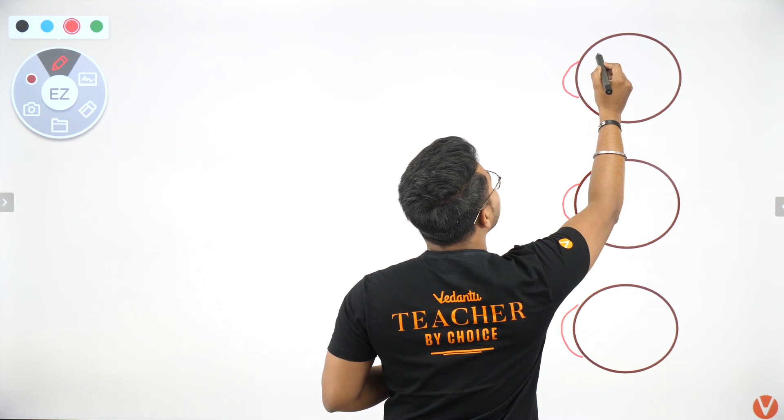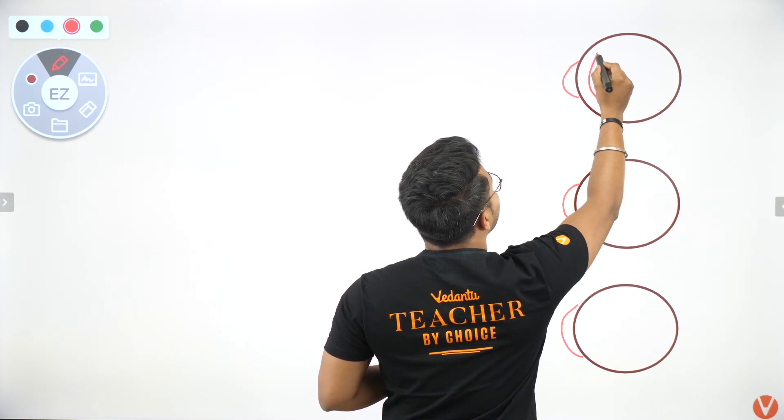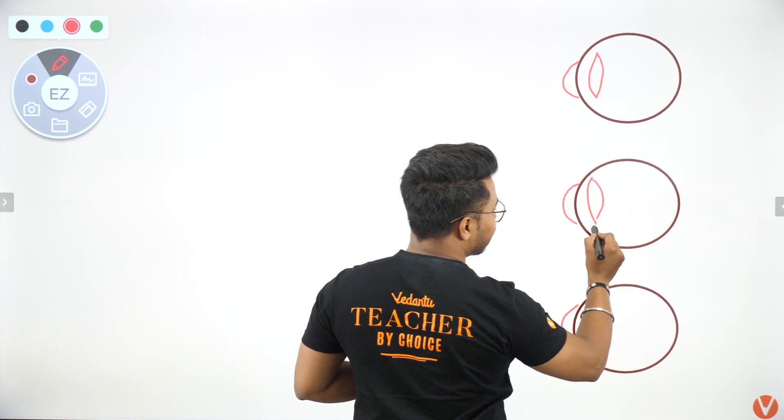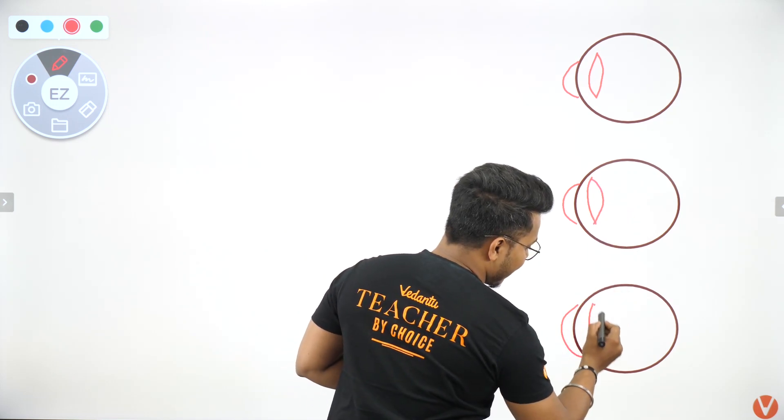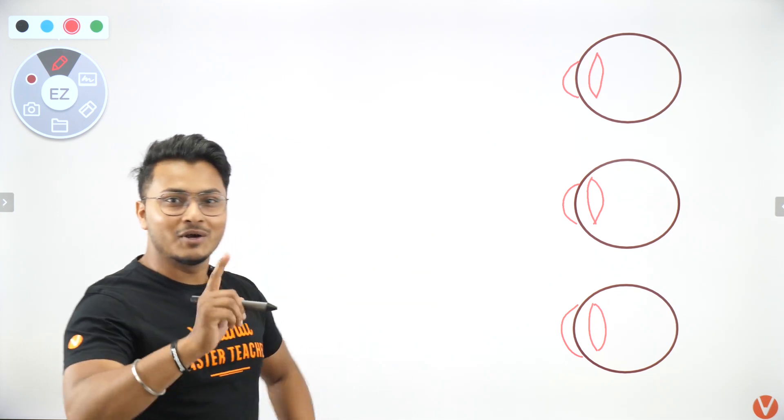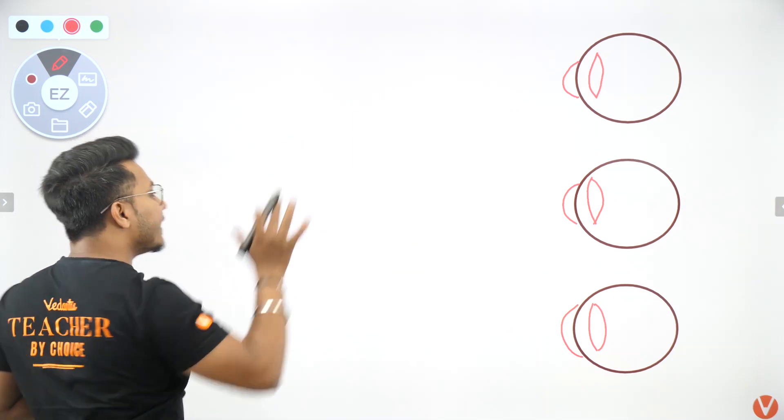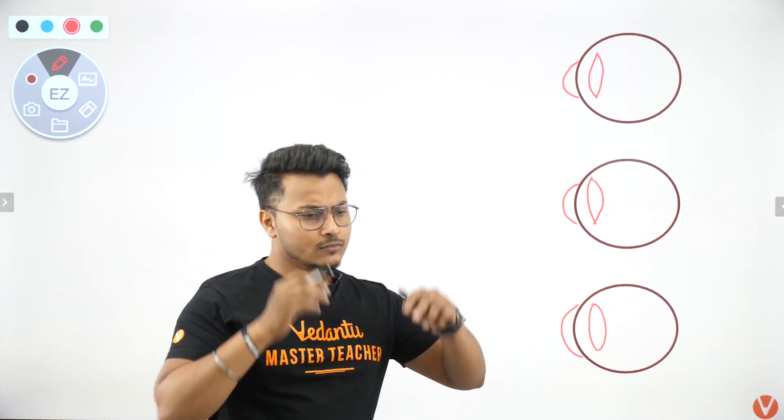After that, you have to make a parallel lens. What will you make? Lens. This is the lens. Yes. This is the best I can do. You can draw better than me, I know. But this is the best I can do. Now let's take the first eye and complete that diagram first.